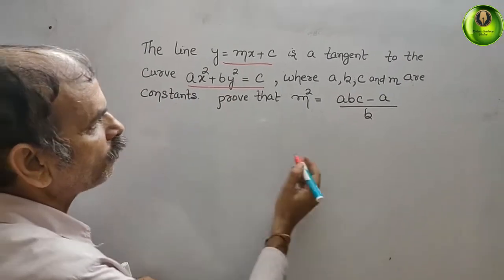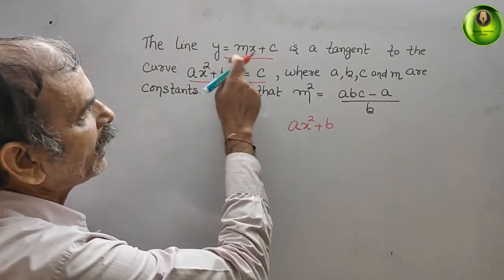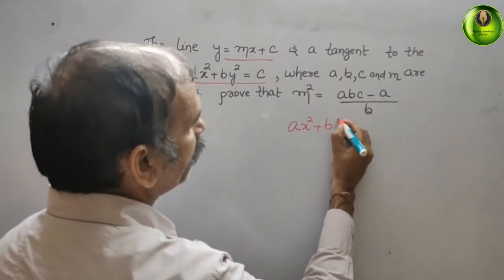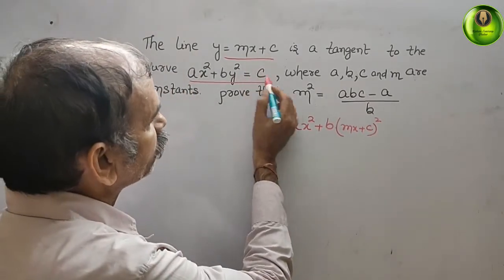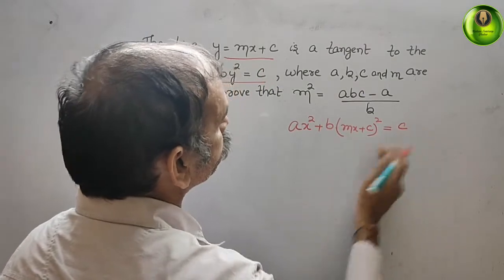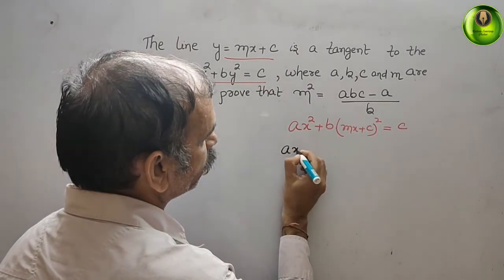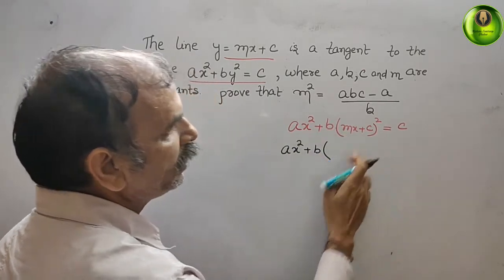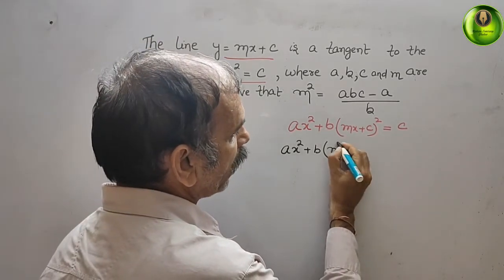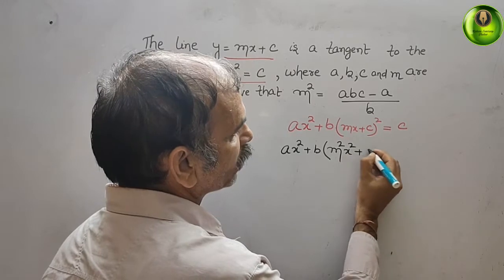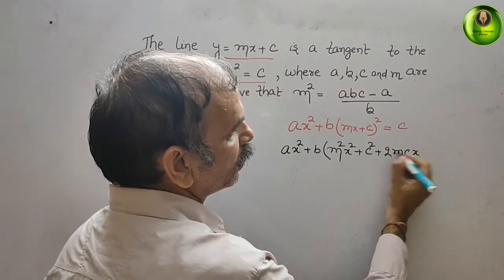After substitution we get ax² + b·y² = c, where y = mx + c, so it becomes ax² + b(mx + c)² = c. Expanding the bracket, we get ax² + b(m²x² + c² + 2mcx) = c.